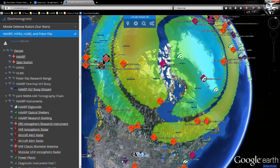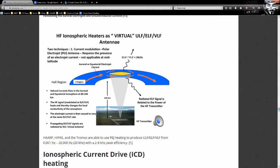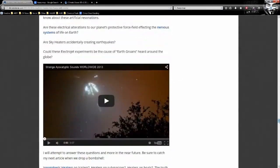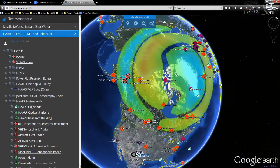The electrojet current is then caused to vary at the same ELF-VLF rate. Propagating ELF wave signals are radiated by this virtual antenna. So, they pump electricity into this. It gives off its own radio signal as a result. And that's why we've been hearing these strange apocalyptic sounds all over the world of electrical sounds in the sky, all of which seem to occur in northern latitudes.